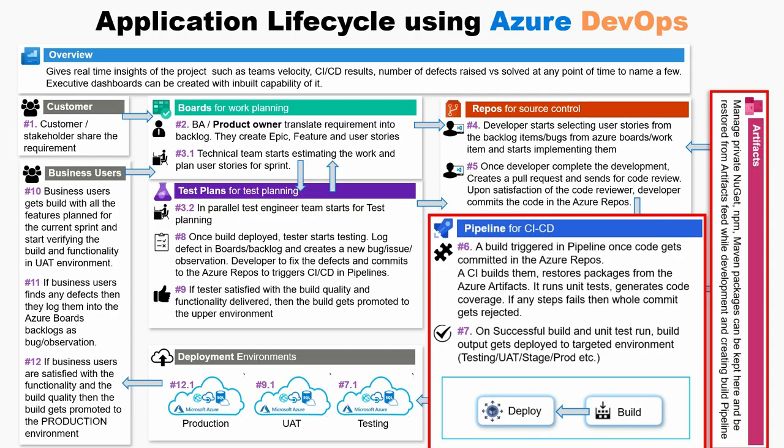A build is triggered in the pipeline once code gets committed in Azure Repos. During continuous integration, the build gets the latest code from Azure Repos and restores private and public packages from the feed set up in Azure Artifacts. It also runs unit tests, generates code coverage, and code complexity reports. On a successful build, the output is deployed to the targeted environment.